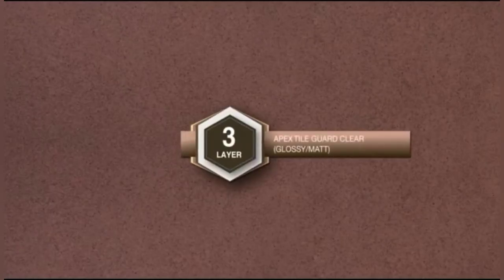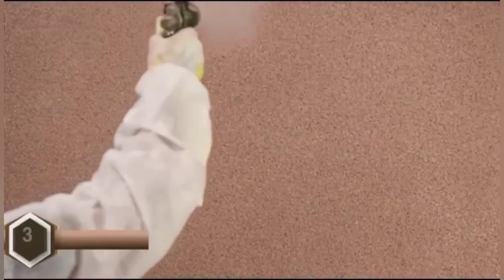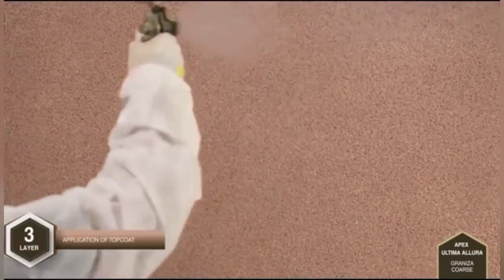Allow this coat to dry for 12 to 16 hours. Layer 3: Application of Top Coat. Apex Style Guard Clear, Matte or Glossy. Two coats of top coat are applied by means of air-assisted PU or enamel spray gun.